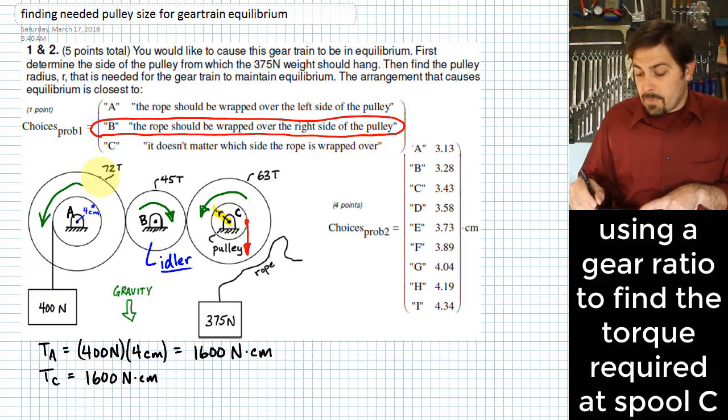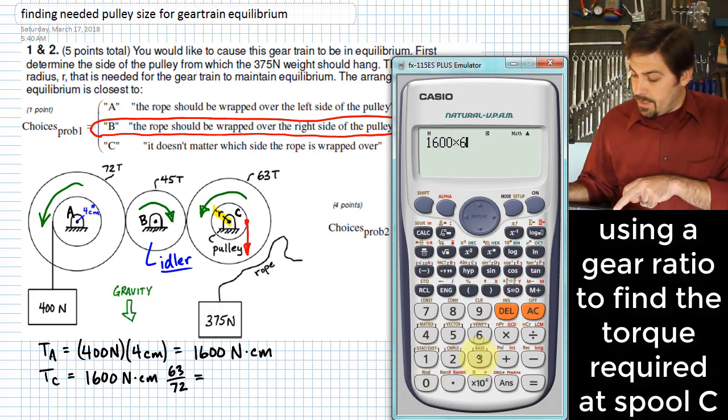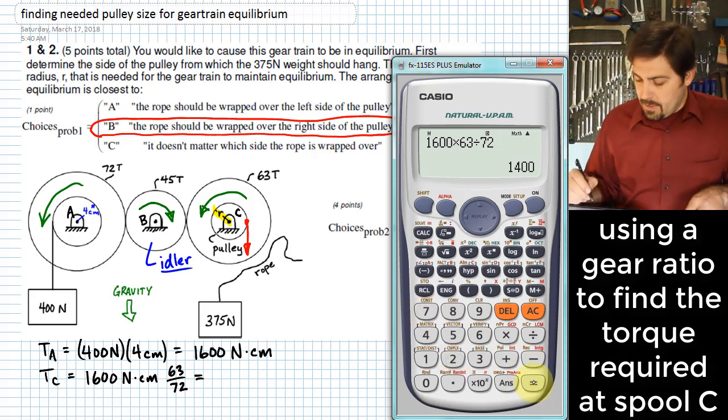We remember that the bigger gear carries more torque, and so the ratio that we need to get over to C is going to end up being one such that it decreases that amount of torque that we would predict, and that ends up giving us 1600 times 63 over 72, which gives me 1400 N·cm.